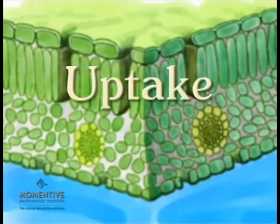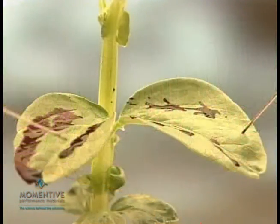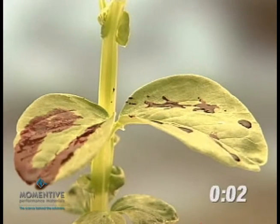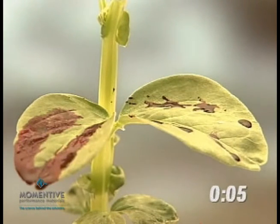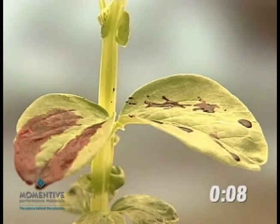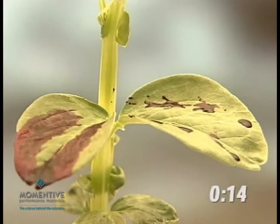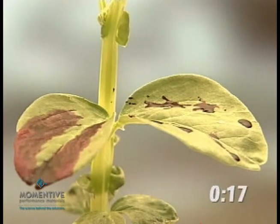Agrochemicals usually must penetrate the protective cuticle that covers all leaves. Although stomata provide a direct route of entry, solutions using most conventional surfactants have surface tensions too high to move into leaves via the stomata. In this demonstration, the formulation contains a red dye so that we can see the rapid infiltration into the leaf via the stomata.